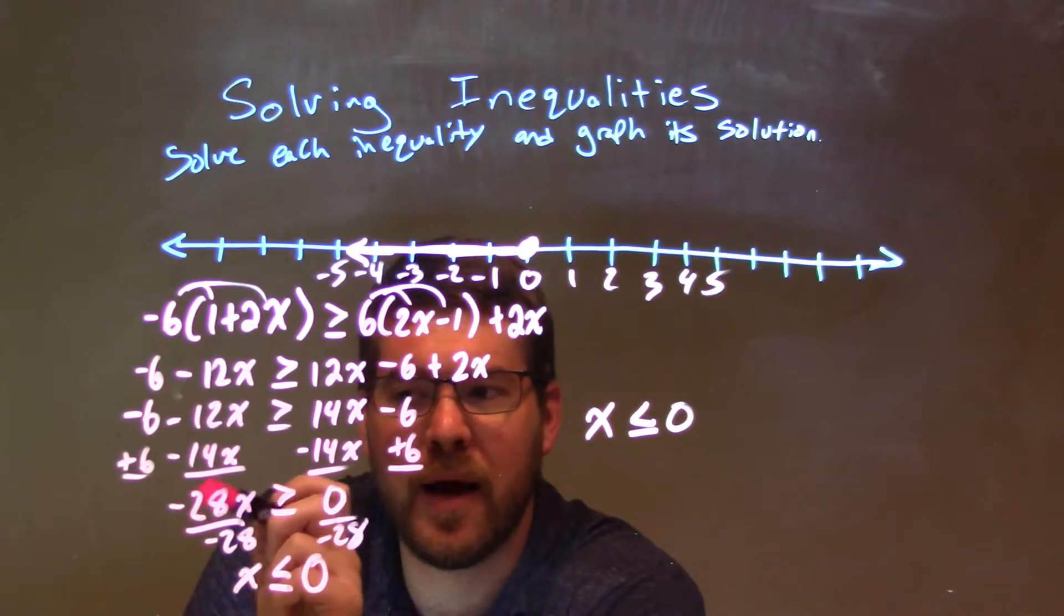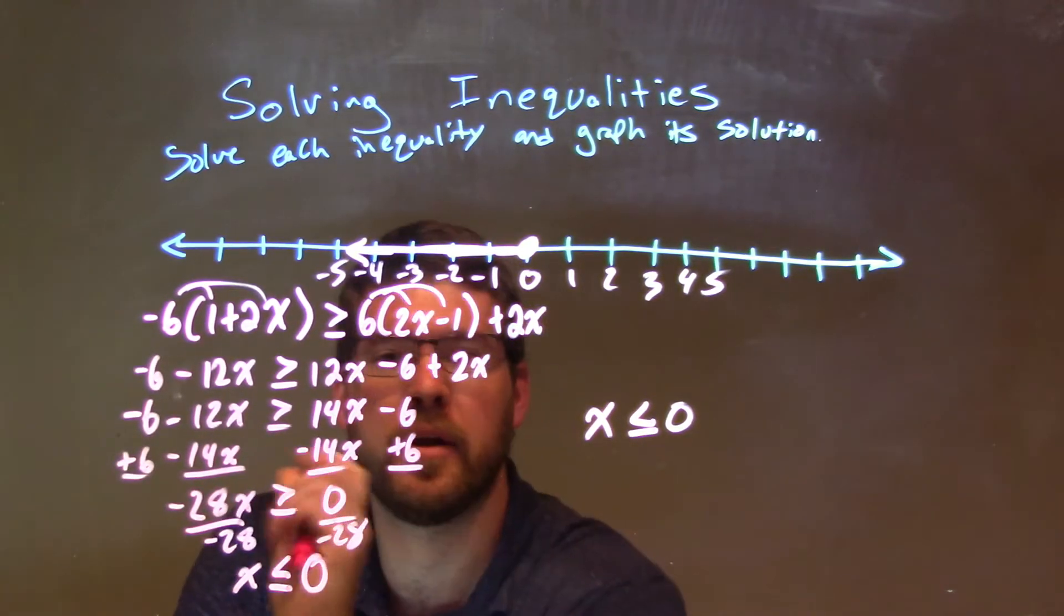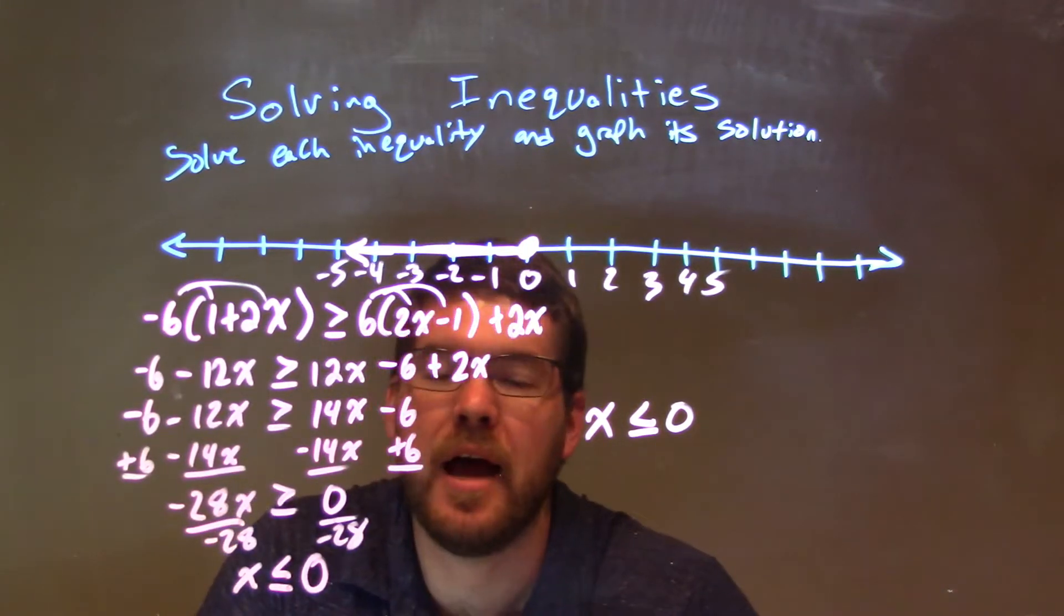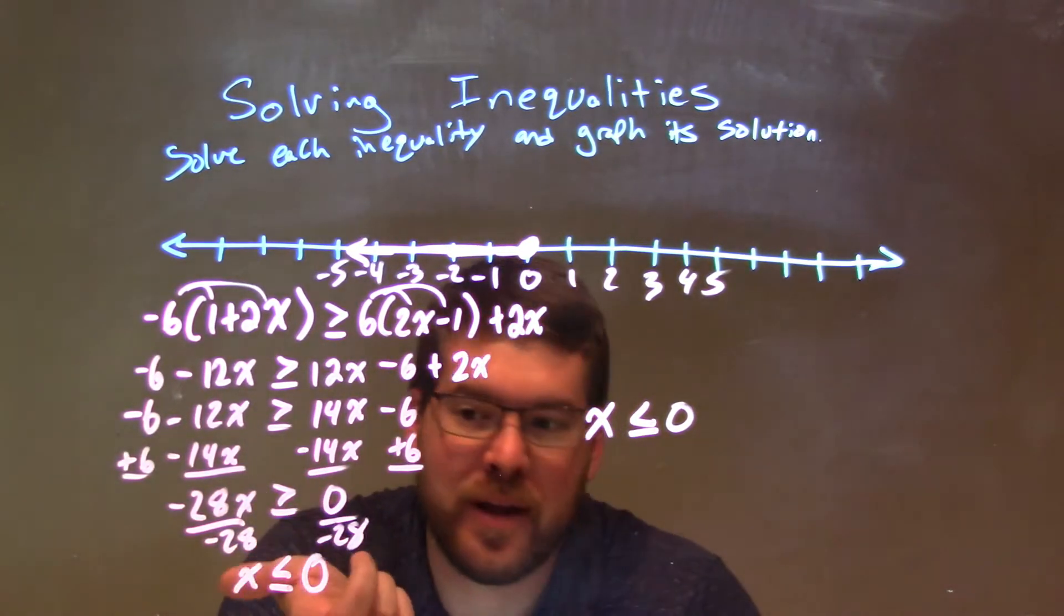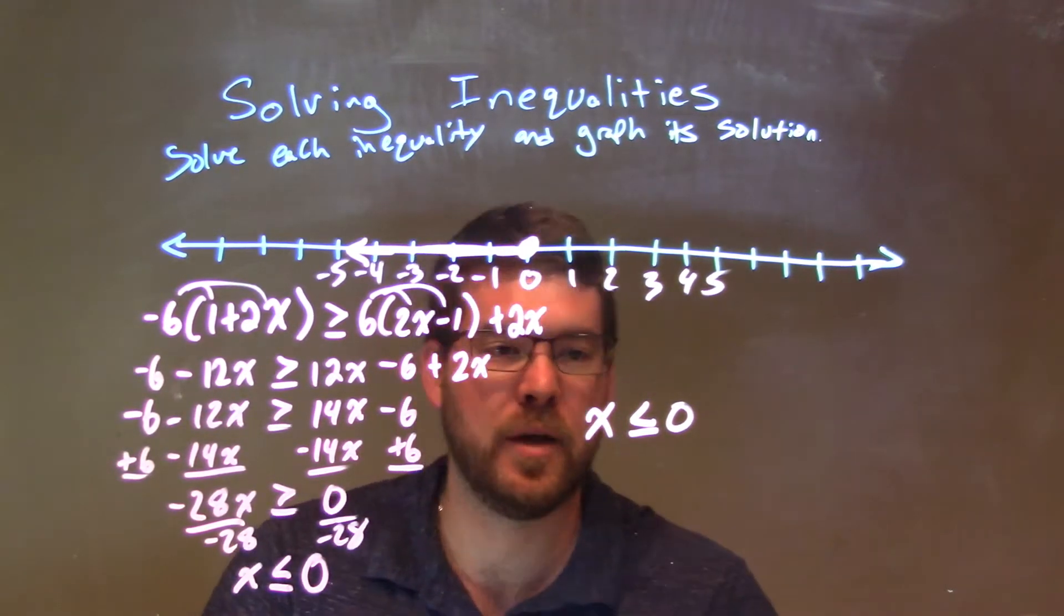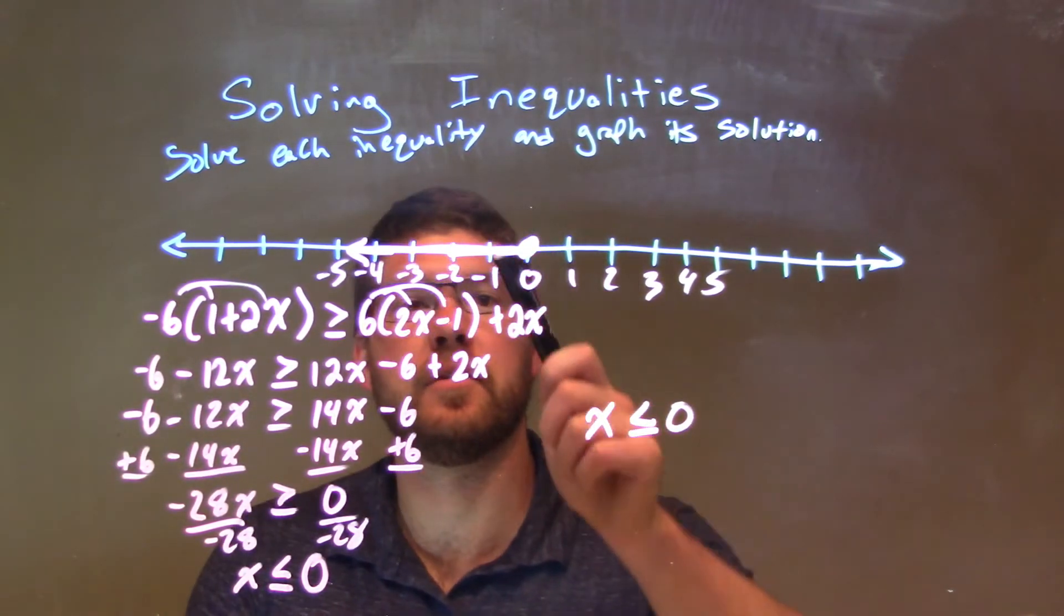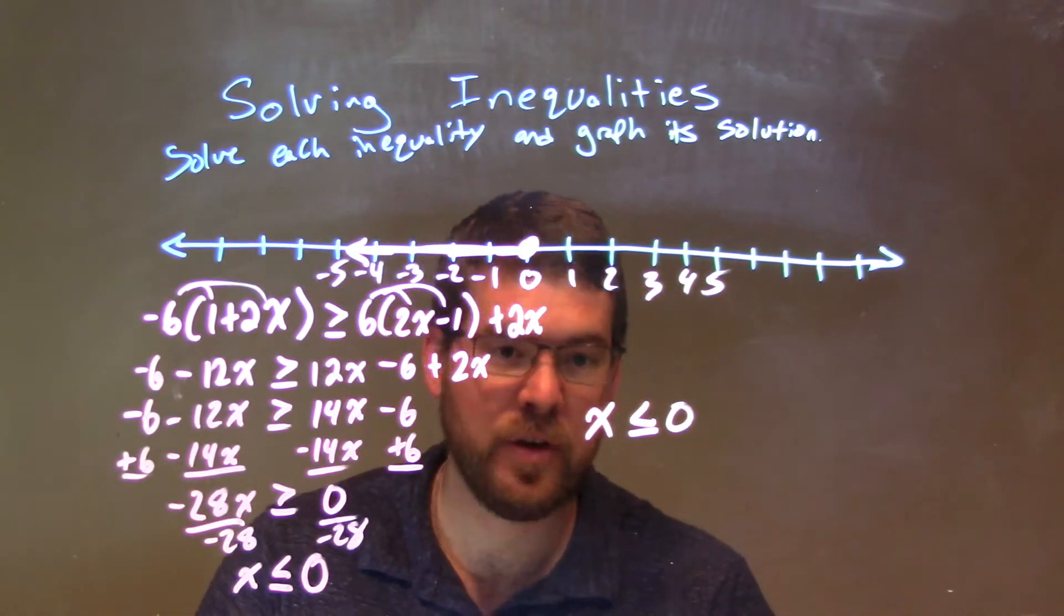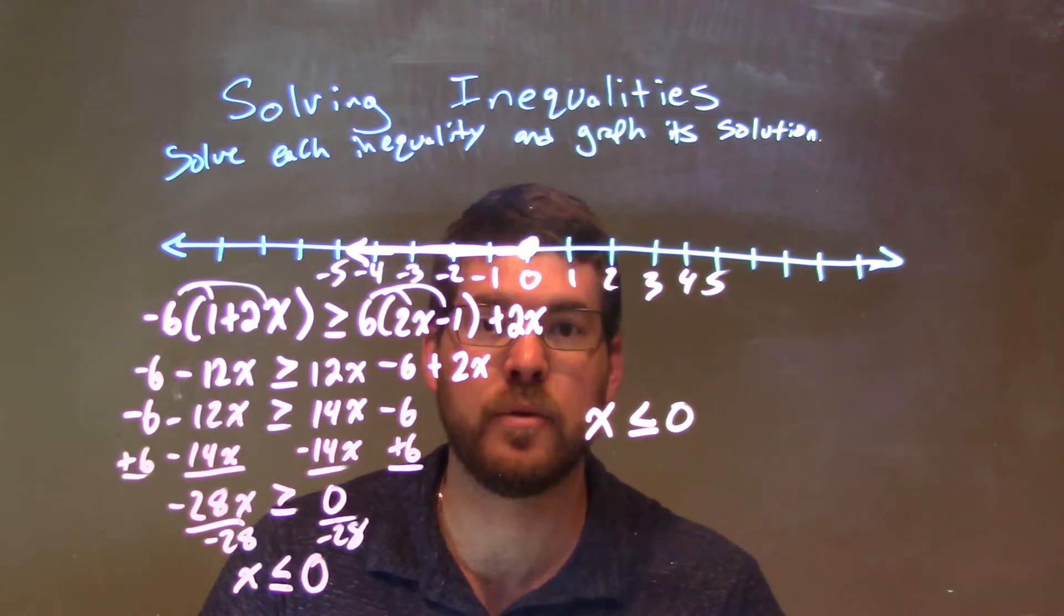The last tricky step is when I divide it by negative 28 over the inequality. Inequality flips from a greater than to a less than sign. And then, we have 0 divided by negative 28 and still just 0 on the right. So our final answer is x is less than or equal to 0. I have a closed circle at 0 because it can equal 0 and less than, so we shade to the left. Again, our final answer is x is less than or equal to 0.